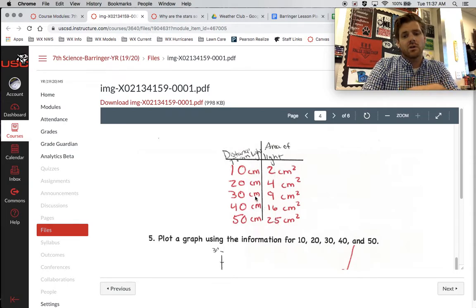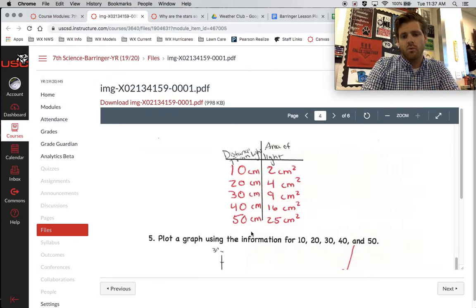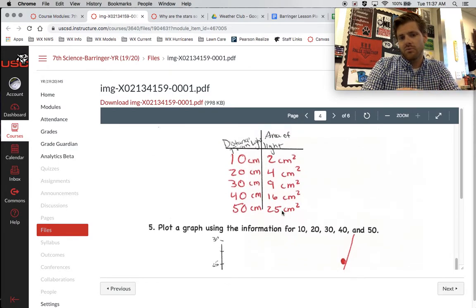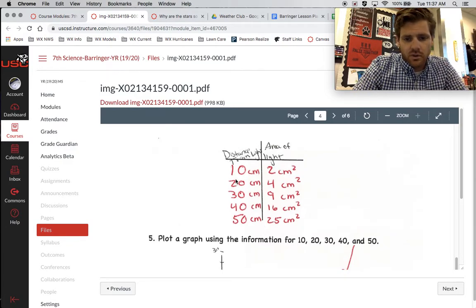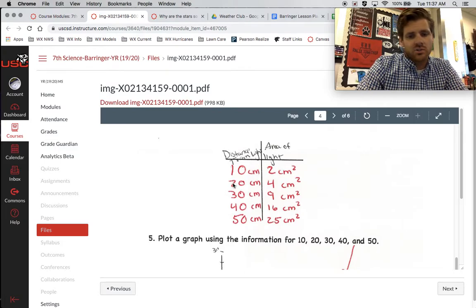And I want to give you a clue to predict what would be the next numbers that would go here. So here's your clue. You can see right here at 20 centimeters, if you take 2 and you square it, 2 squared will give you 4. 3 squared will give you 9. 4 squared will give you 16. And 5 squared will give you 25.